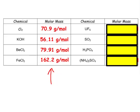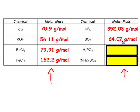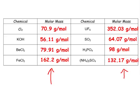Go ahead and pause the video and now solve these on the right. Restart when you have answers. So you should have gotten 352.03, 64.07, 98 grams, and 132.17. This last one was probably the hardest one. We had two nitrogens, we have eight hydrogens, one sulfur, and four oxygens. Remember that you're multiplying the number on the outside by the subscript. So two times one and then two times four.